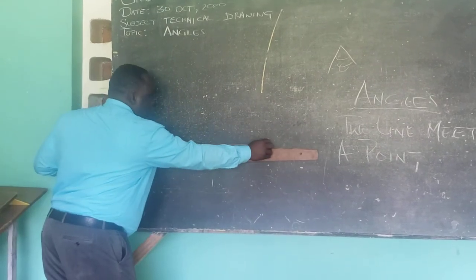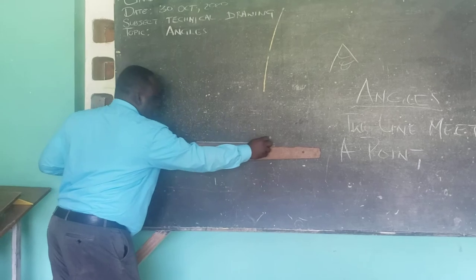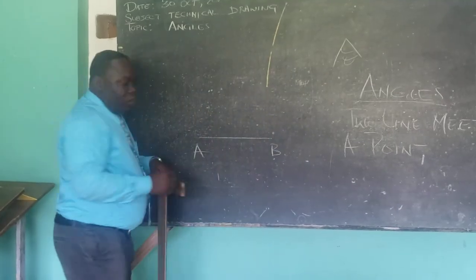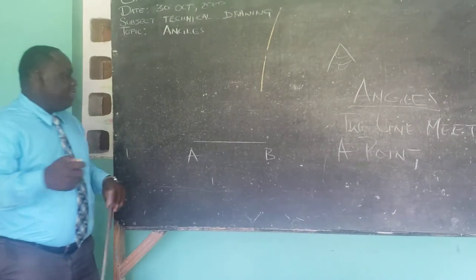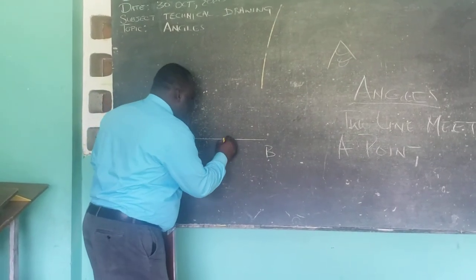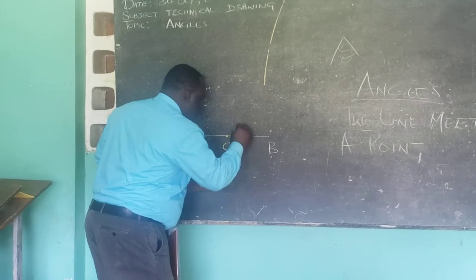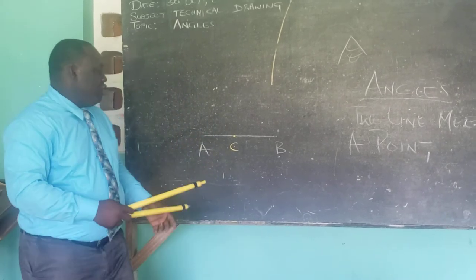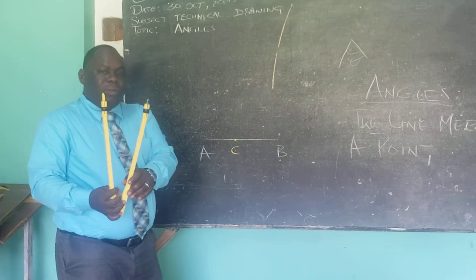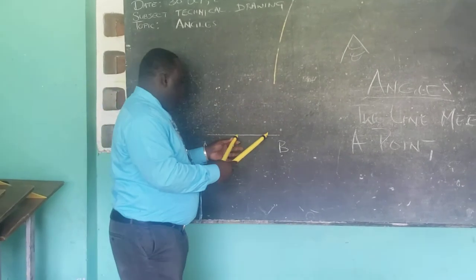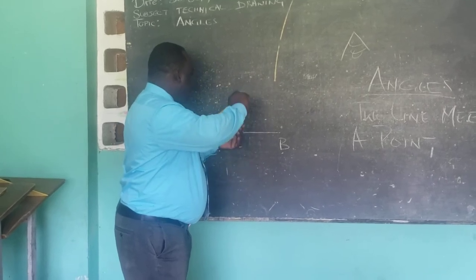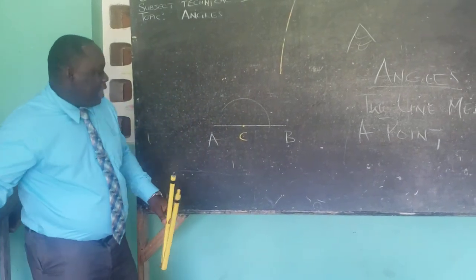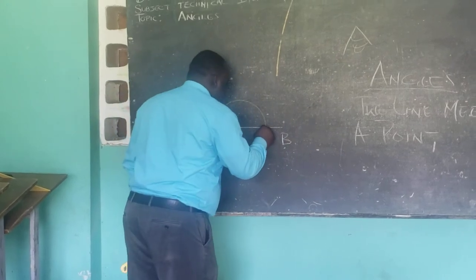Let's look first and foremost at how we go about constructing a 60 degree angle. We have our line here and our line is AB. We're going to be constructing a 60 degree angle at C, using C as the point from where we're going to be constructing our angle. At C, we're going to open our compass to a suitable radius and swing an arc. You'll notice that the arc cuts the line AB, and we will call that point D.